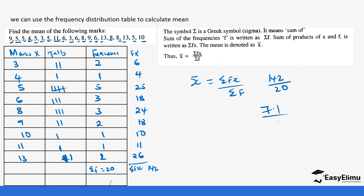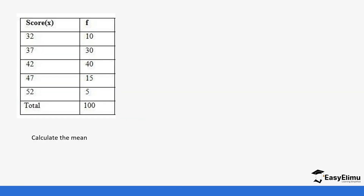Rarely are you given raw data and asked to calculate the mean directly. Most of the time you are given a frequency distribution table and asked to use it to calculate the mean. So let's do another example. You have been given a specific frequency table, and we need to calculate the mean using the formula: sum of fx over sum of f.